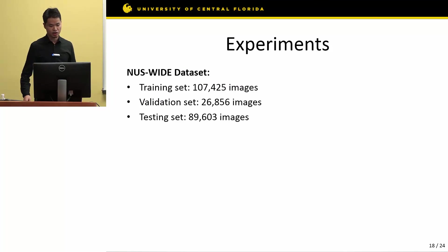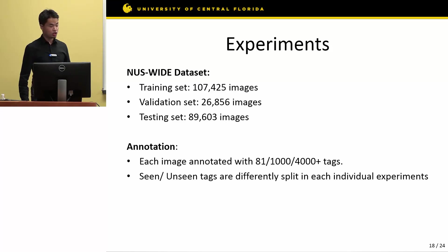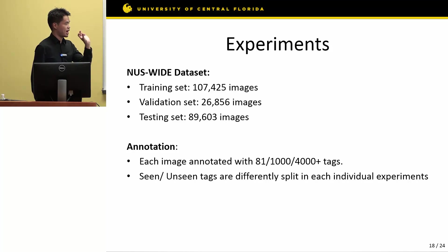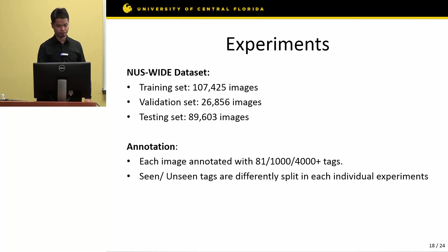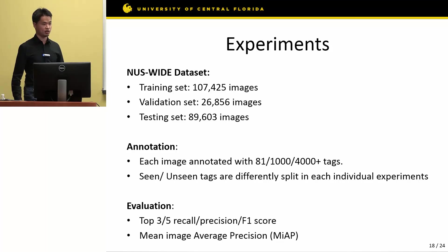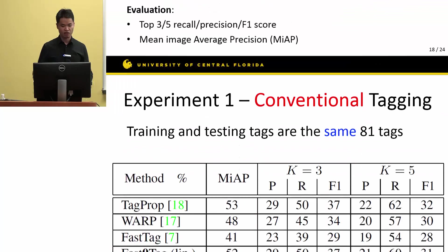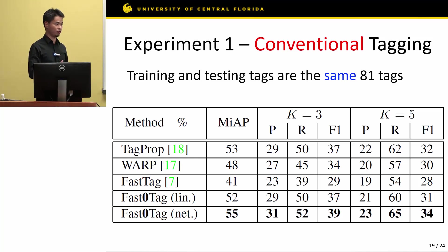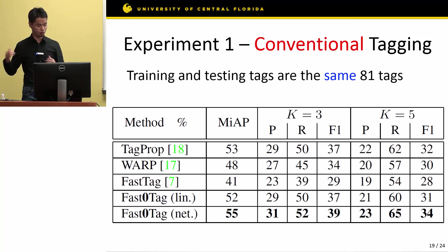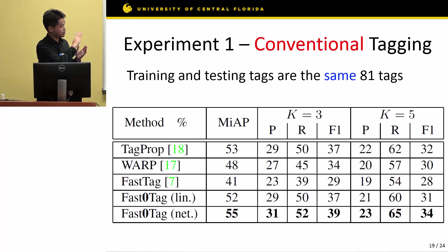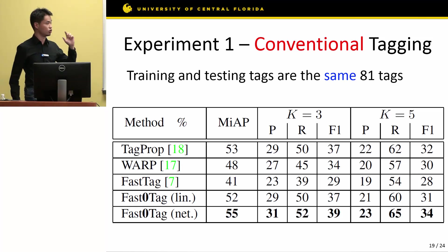We perform experiments on the NUS-WIDE dataset, which is a large dataset containing around 200,000 images. Each image is annotated with one of three tag configurations which are mutually exclusive, and we use different configurations for different tasks. We evaluate our method on seven comprehensive complementary evaluation metrics. For conventional tagging performance — training on seen tags and testing on the same seen tags — we compare our method with state-of-the-art methods across all seven evaluation metrics, and we can see that our nonlinear approach outperforms other baselines in all evaluation metrics.